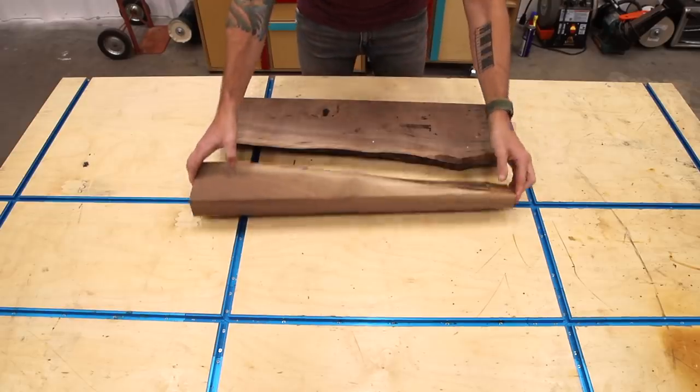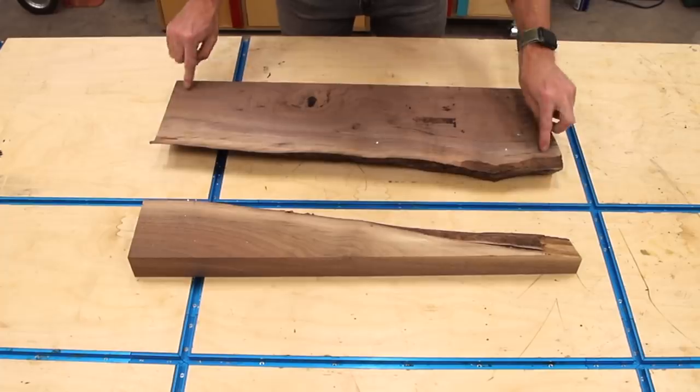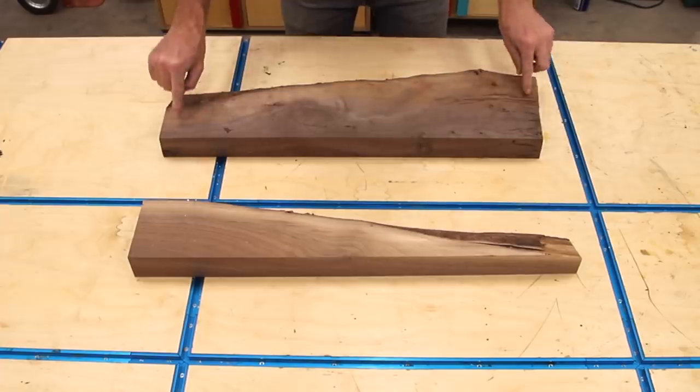Using some walnut offcuts left over from the kitchen I made recently, I'm going to make a serving board slash cutting board with a few twists.